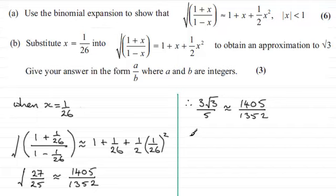And so if I just multiply both sides by 5 and divide both sides by 3, I end up with root 3 then being approximately the same as 5 thirds multiplied with that fraction 1,405 all divided by 1,352.